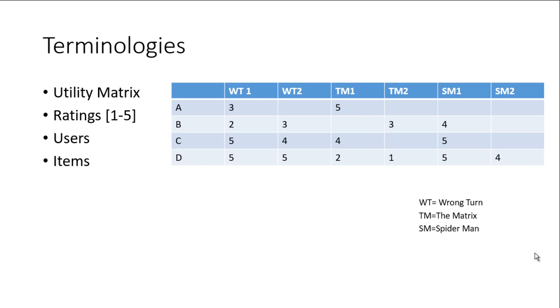Leftmost column of the utility matrix contains the users: A, B, C and D are users. The topmost rows contain the list of items. Here we are taking movie names as items.